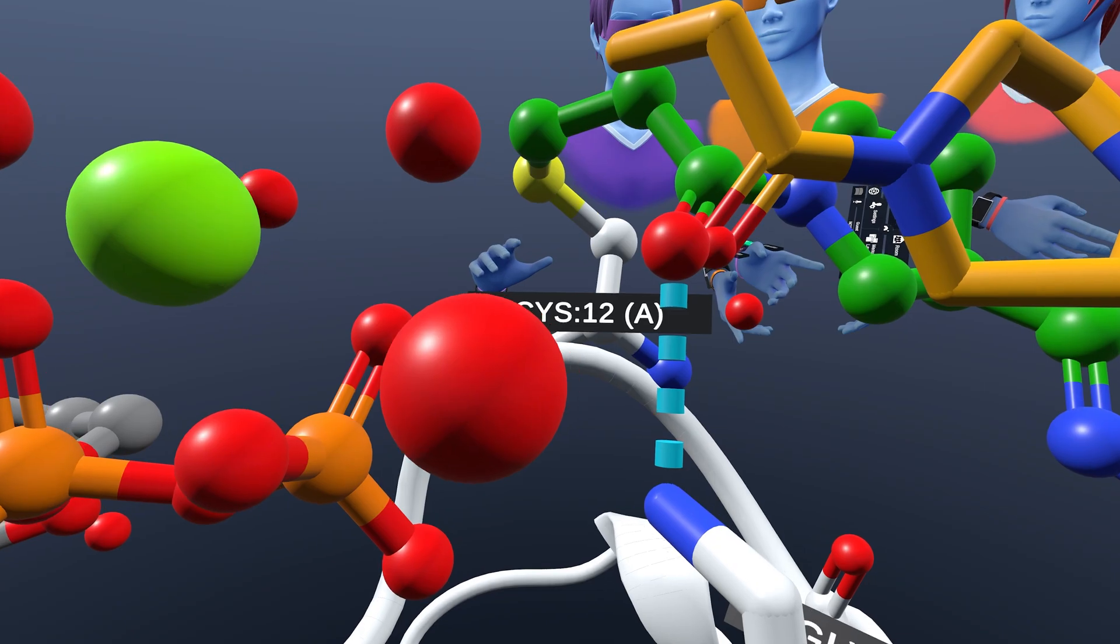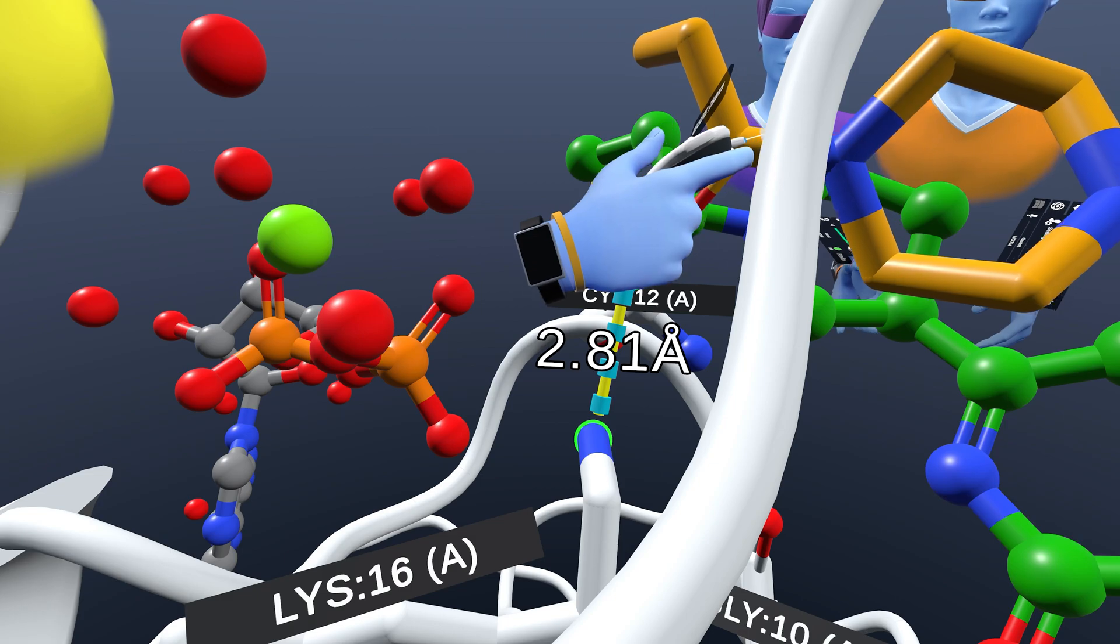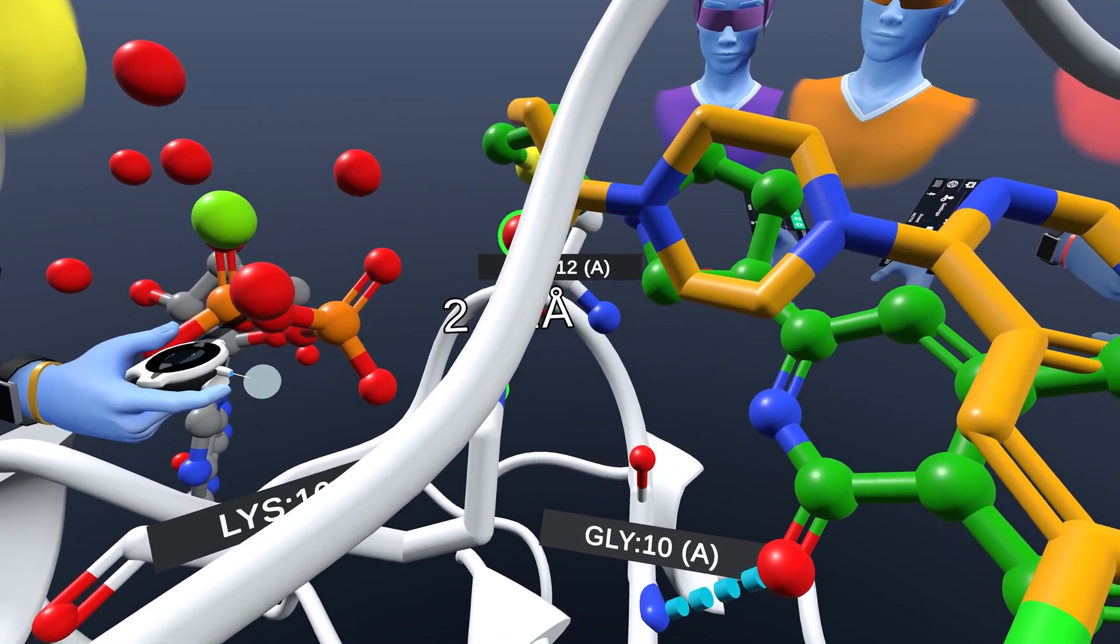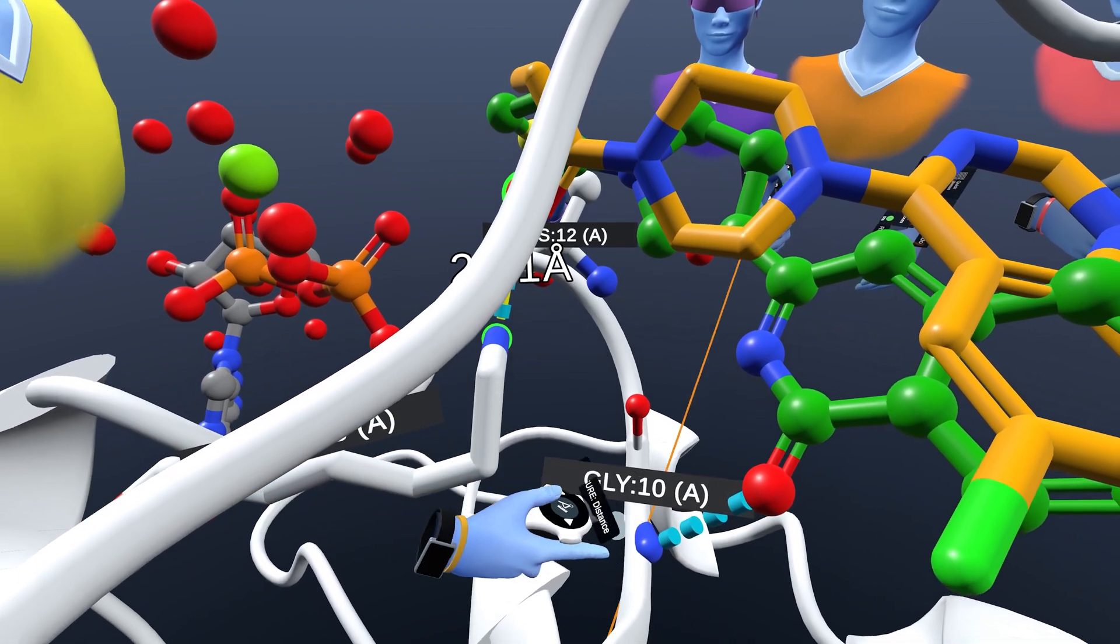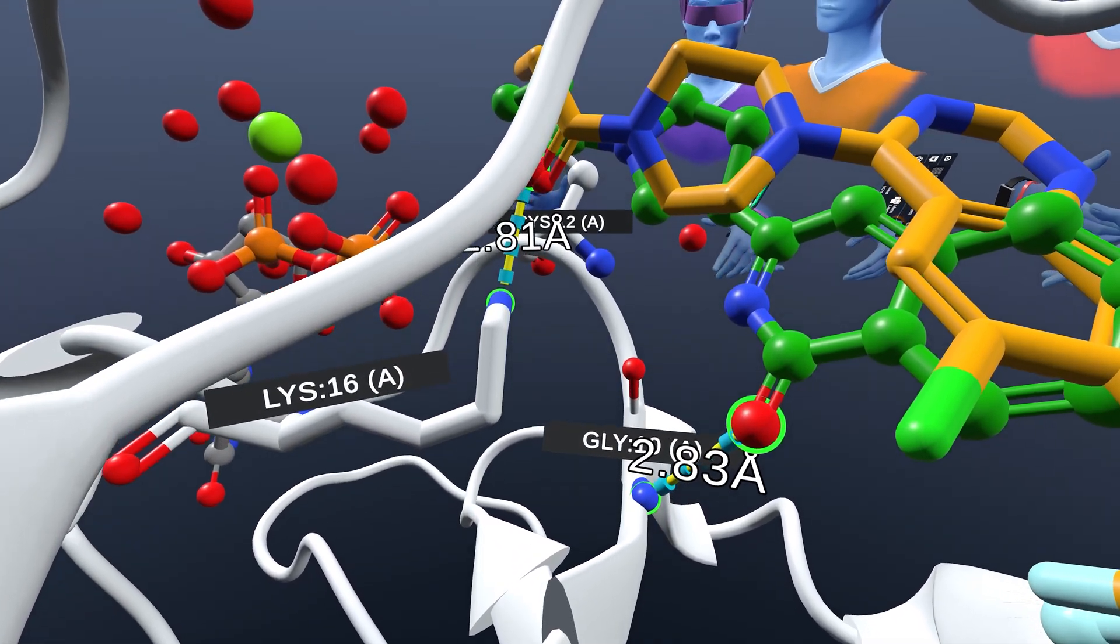What's the distance to that lysine? Are we able to measure that in Nanome? 2.81. Yeah, really nice. And what about the glycine to the carbonyl? What's that about? About the same? So we got this one right there. Yeah, 2.83. Nice.